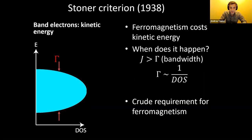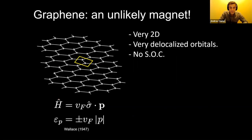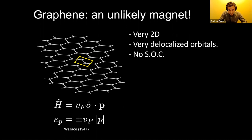Typically when we start from band theory, the thing you can tune is the density of states. From this point of view, graphene-based systems are very unlikely forums to study magnetism because they're very two-dimensional, their orbitals are very delocalized, their density of states is correspondingly low, and there's no spin-orbit coupling. So you essentially have none of the ingredients that you usually have for magnetism — you have to do something to graphene to turn it into a magnet.